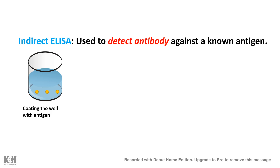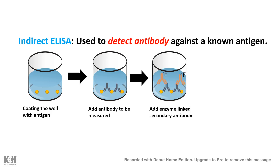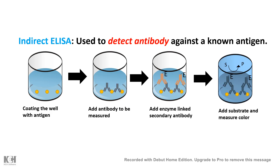First, we coat the plate with the specific antigen. Then we add the patient's blood sample, which contains the antibody to be measured. If the patient's blood sample has the particular antibody, it will bind to the antigen. We then add a secondary antibody linked with an enzyme as a detection probe, which gives rise to a color reaction indicating the presence of the antibody against the specific antigen.